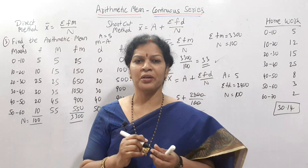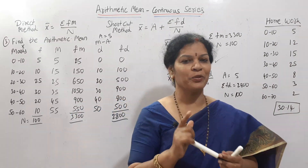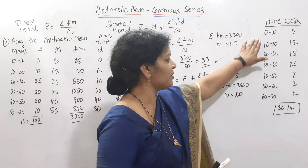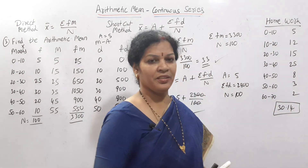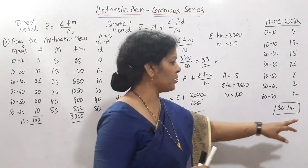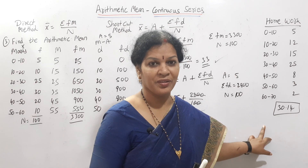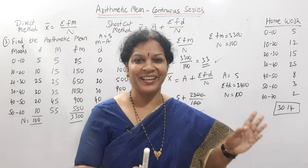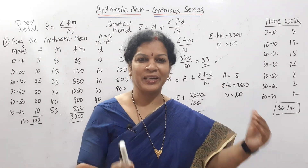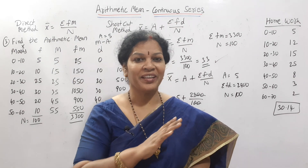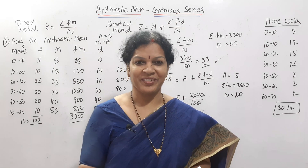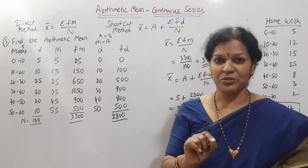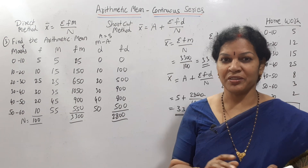This is your homework — work out both methods for the given problem with X and frequency. Your answer should be 30.14. If you get the same answer, please write it in the comment box. Practice, practice, practice — the more you practice, the more perfect you become. Also, in the exam, draw the table clearly using a pencil and scale, and write all formulas neatly.